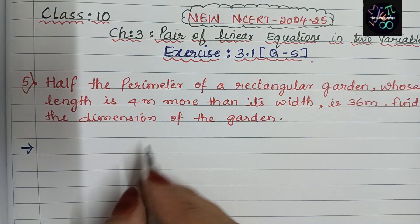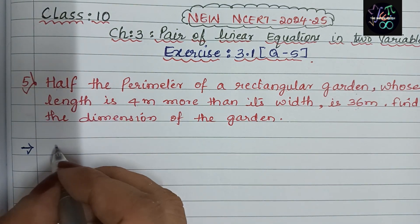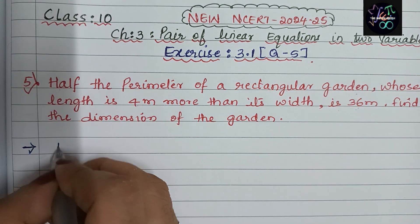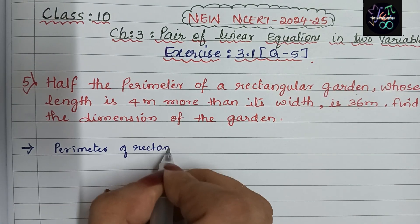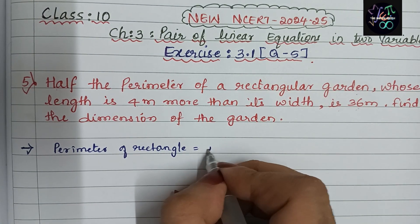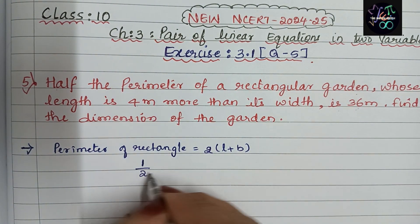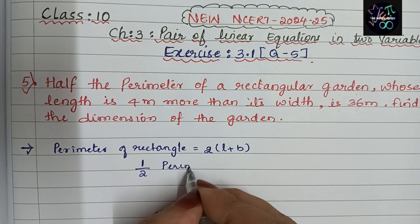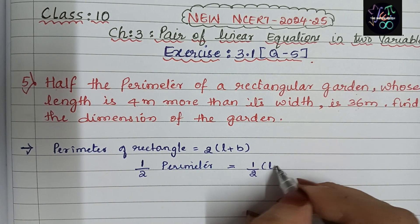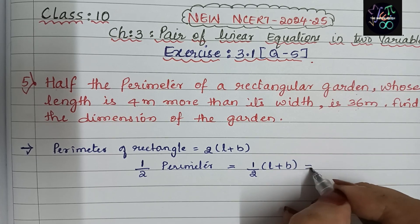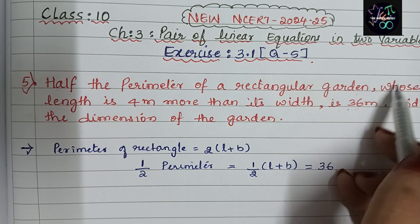First, let us frame the pair of linear equations — two equations. They have given half the perimeter. We know that the perimeter of a rectangle is 2(length + breadth). Here they have given half the perimeter. Half perimeter of the rectangle is half into (length + breadth), which equals 36.